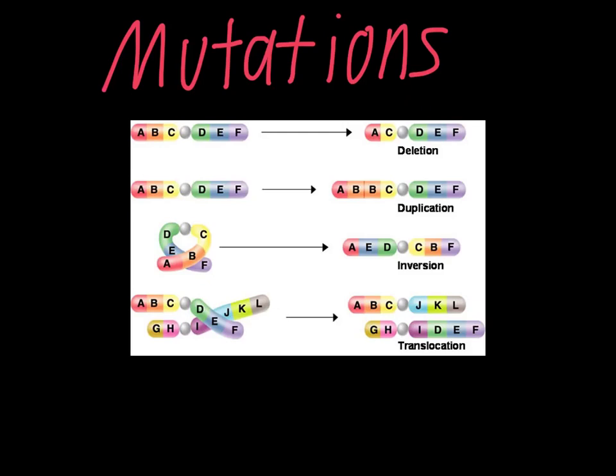The next one is sort of like the opposite of a deletion. We have the same normal chromosome, but in this case, instead of getting no Bs, we actually end up getting two Bs. Having two of them is called a duplication — you now have a section of DNA that was copied twice. Even though this doesn't seem like a big deal, actually having more DNA can be a problem in some cases, even more so than having too little. For example, trisomy 21 is the common name for Down syndrome, and that's just having an extra chromosome 21. So that individual actually has more genetic material than a normal person, but that causes problems.